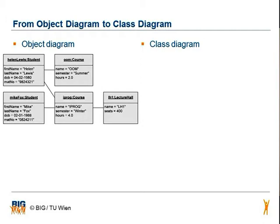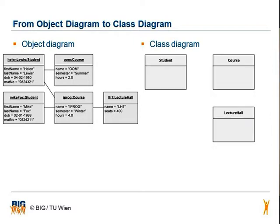The first step is to identify the classes. They are written to the right of the object name at the top of each object. In this example we have the classes Student, Course, and Lecture Hall.